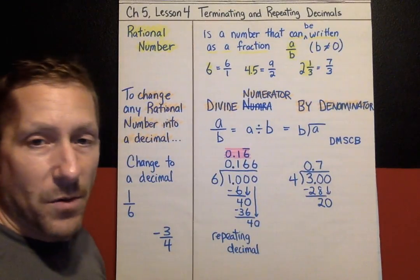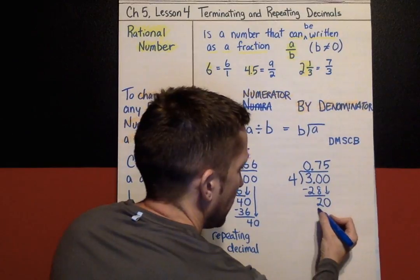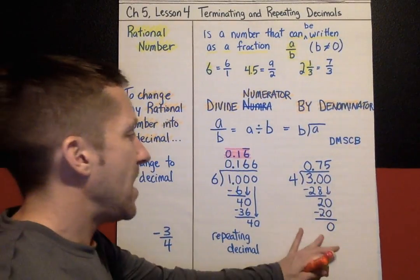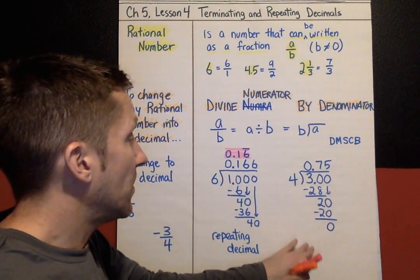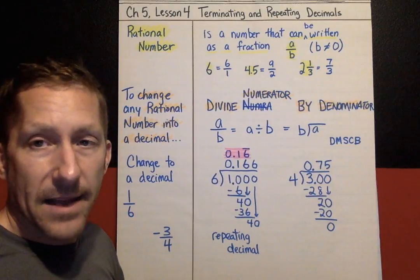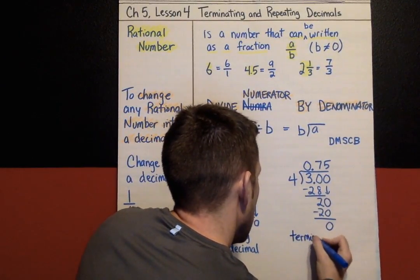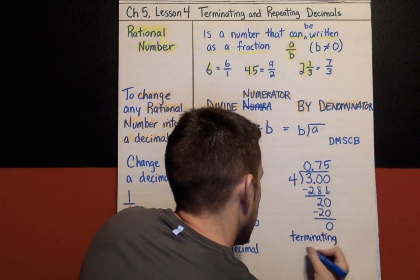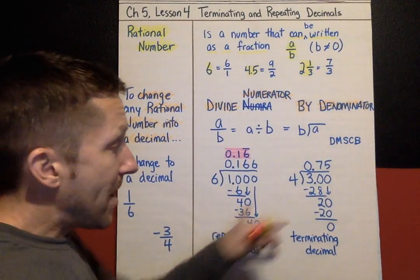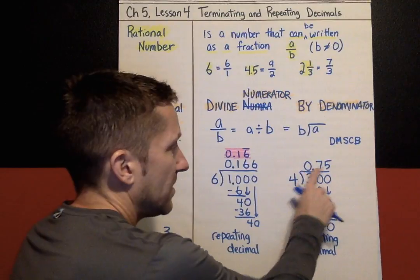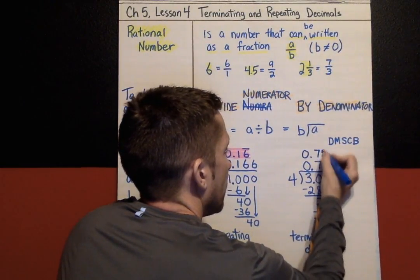Back to divide — how many fours fit into twenty? Five times. Five times four is twenty. This decimal ends and finishes — I don't have anything left over, no remainder, no more numbers to bring down. This is called a terminating decimal; in other words, it terminates, it ends, it finishes — it does not keep going in a loop. Because it was negative, my final answer is negative 0.75.